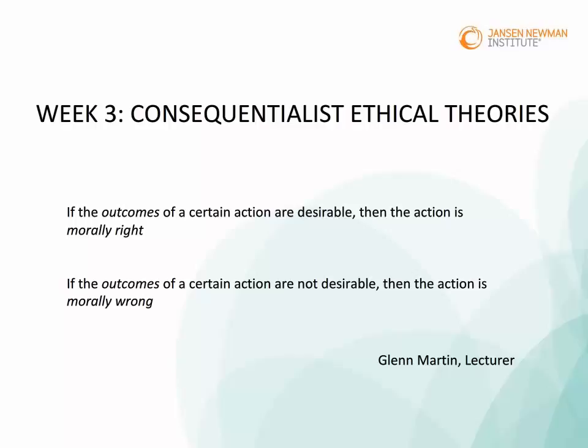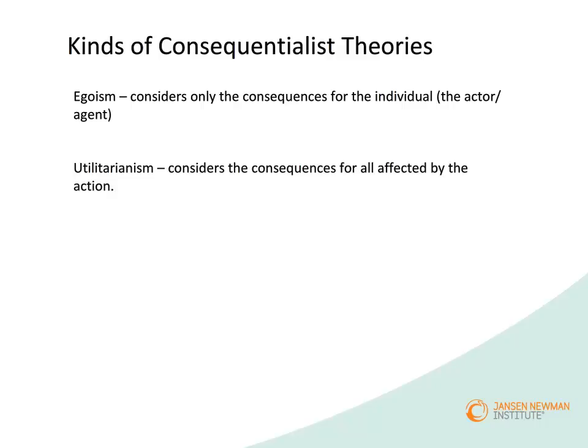That sounds like a simple enough proposition and it seems to make common sense. Within the world of consequentialist theories, there are a couple of divisions. The first is about egoism and general utilitarianism. Egoism says that a person will make a decision based on what they think the consequences will be for them — it's an egotistical approach. Whereas the broader utilitarianism stance is that you consider the consequences for all who are affected by the action.